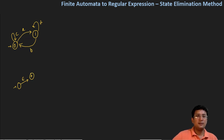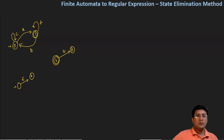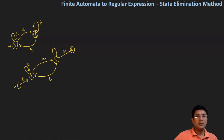This is the final state, and here we have an outgoing edge with an epsilon transition to a new final state. State number 1 is the final state. So let's say C is here, then A is here, and then B is here, and there is a self-loop at state number 1.